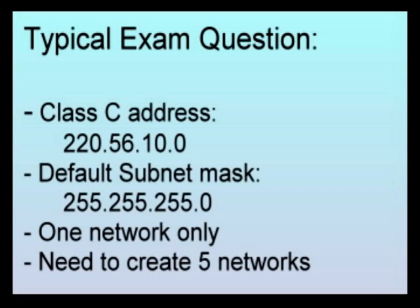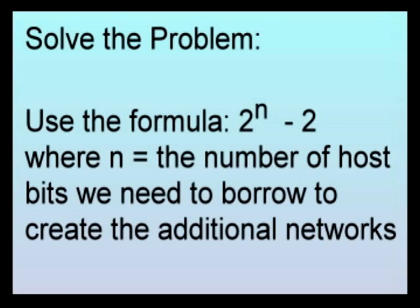So how are we going to do that? We're going to start by using a very simple formula: 2 to the n minus 2. In this case, n is the number of bits that we need to borrow from the host side of the address in order to create the additional five networks that we need.